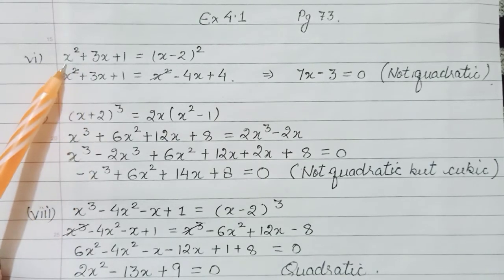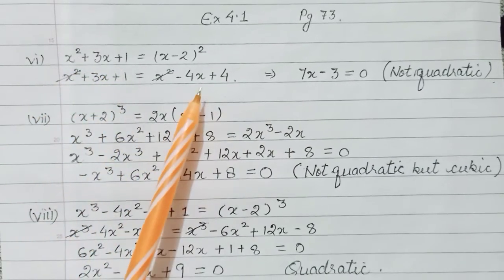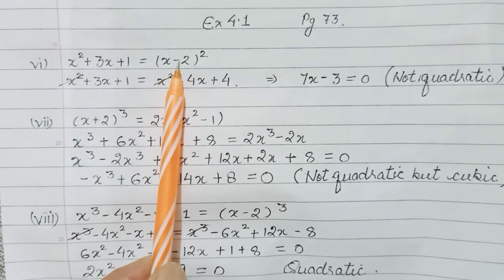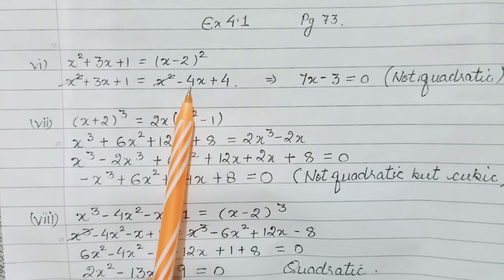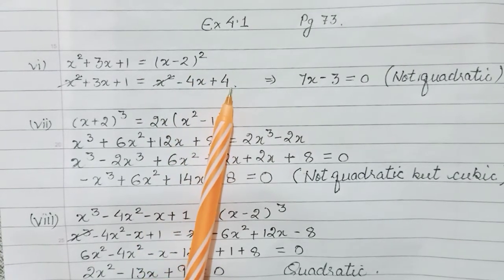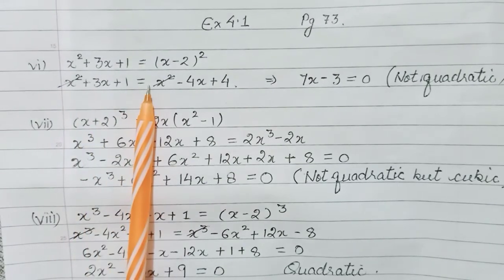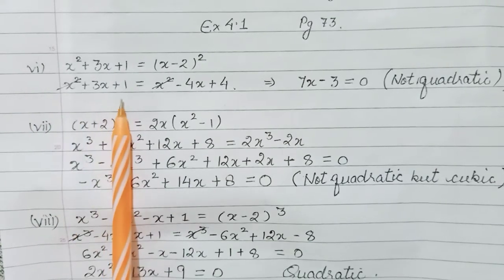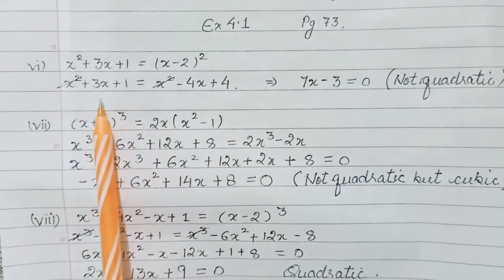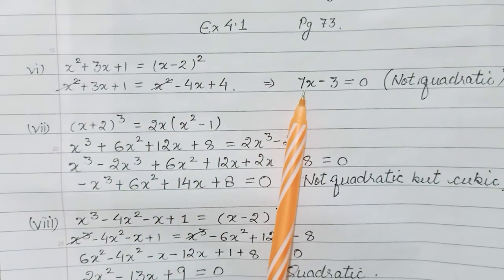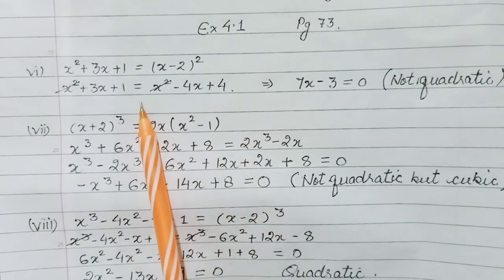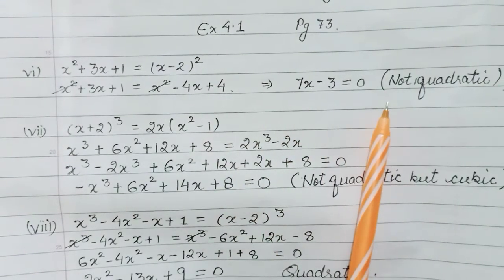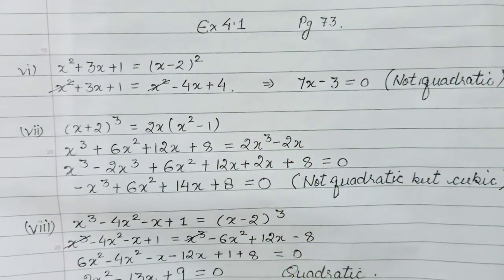The sixth part has x² + 3x + 1 on the left and (x-2)² on the right, opened using (a-b)² = a² - 2ab + b². The x² terms cancel. Collecting the x-terms: 3x + 4x = 7x, and the constants give -4 + 1 = -3. The highest power is 1, so this is a linear equation — not quadratic.